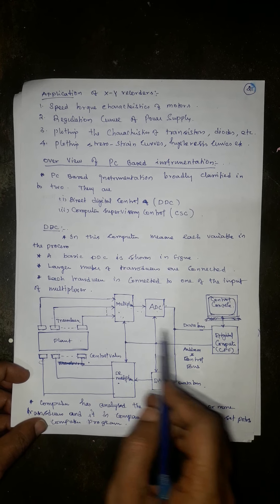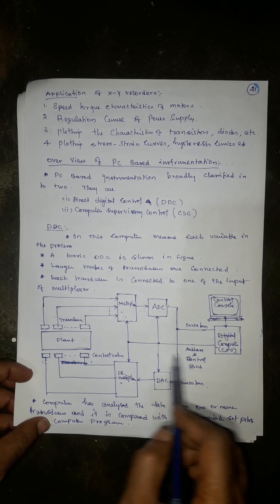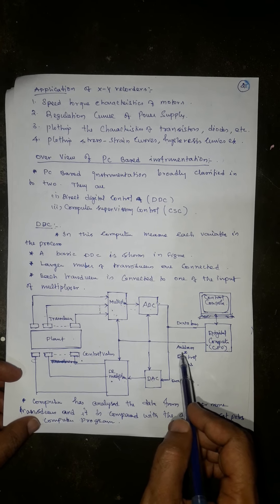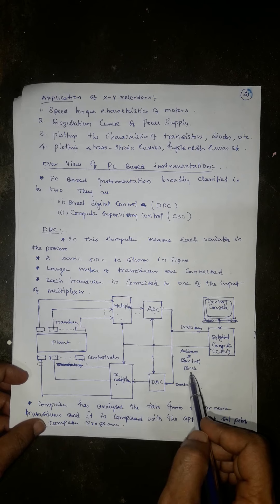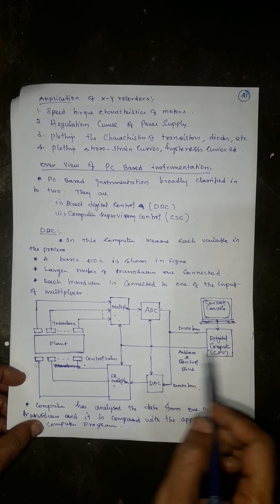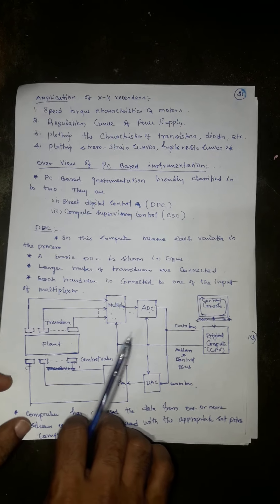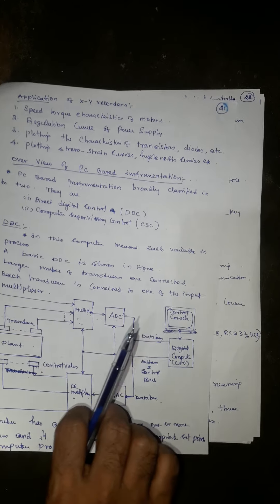The data transmission in DDC — including address, control bus, and data bus — is all parallel data transmission.